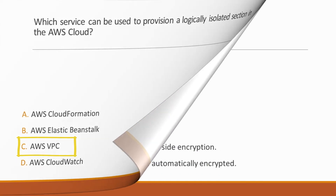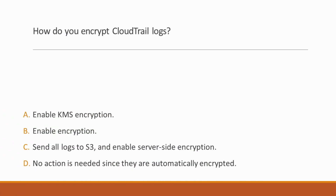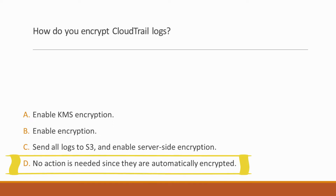Next question: How do you encrypt CloudTrail logs? Options: A. Enable KMS encryption, B. Enable encryption, C. Send all logs to S3 and enable server-side encryption, D. No action is needed since they are automatically encrypted. Correct answer is option D, because by default, log files are encrypted using server-side encryption with S3 managed encryption keys.